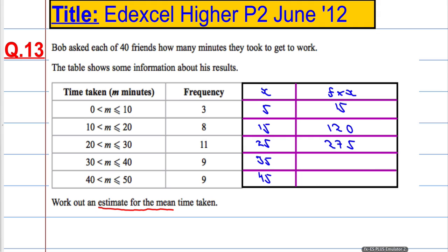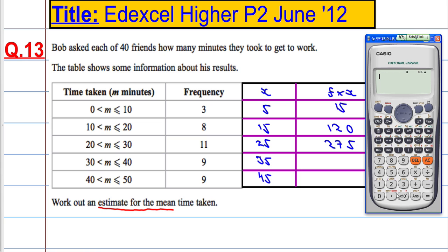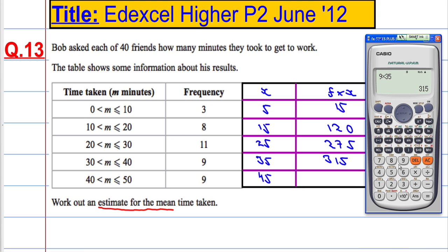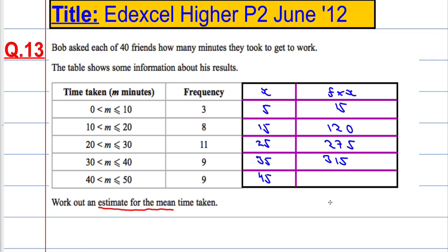I'm going to get the calculator out so I don't make a mistake here. 9 times 35 is 315. And then 9 times 45 is 405.